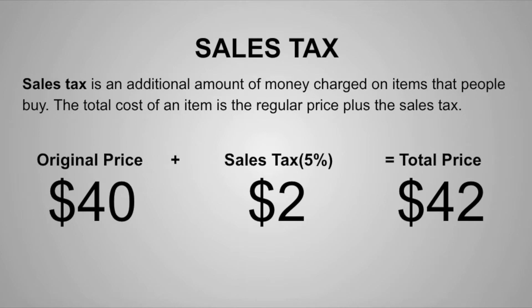The first thing we're going to look at is sales tax. Sales tax is an additional amount of money charged on items that people buy. The total cost of an item is the regular price plus the sales tax. So you can see in the example below, the original price was $40, but with a 5% sales tax, which was $2, the total price will be $42.